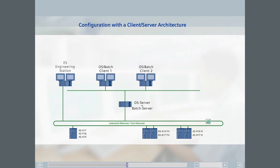The displayed process values, messages, and pictures come from the server. All operator input to the automation station is through the server. The engineering station is also connected to the terminal bus, over which downloads are made to the clients and server.